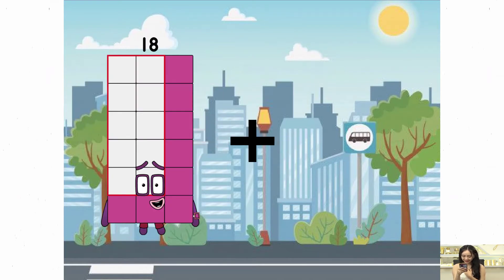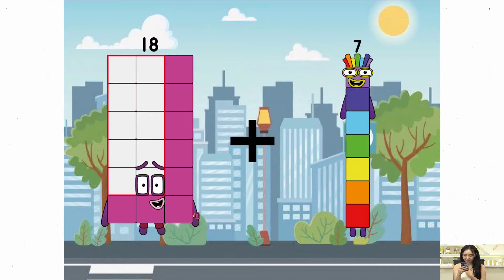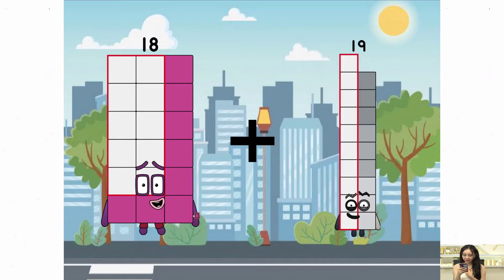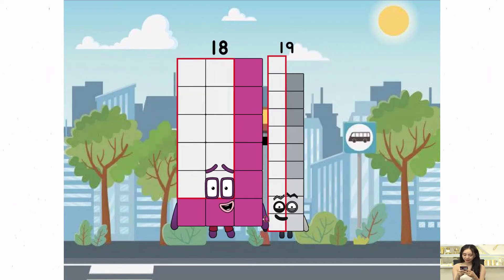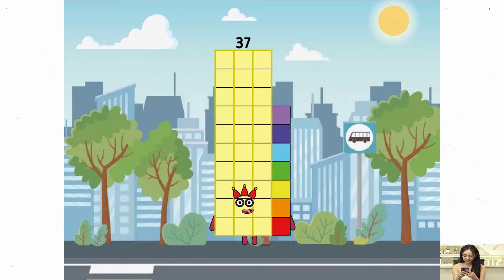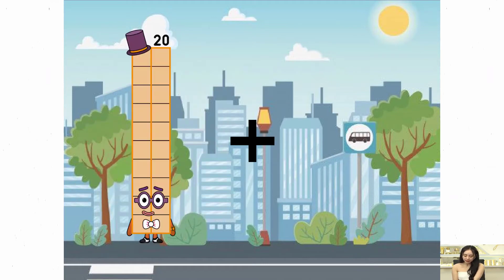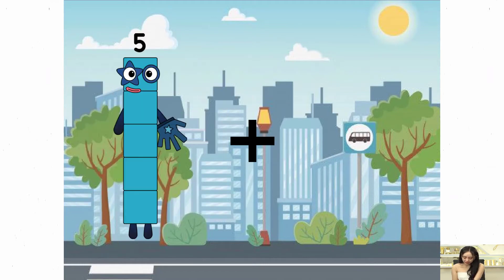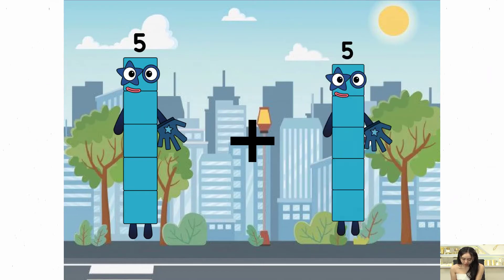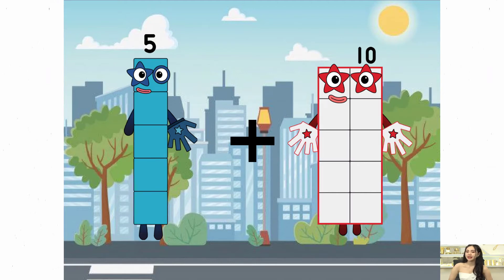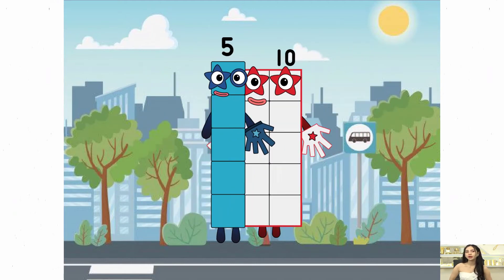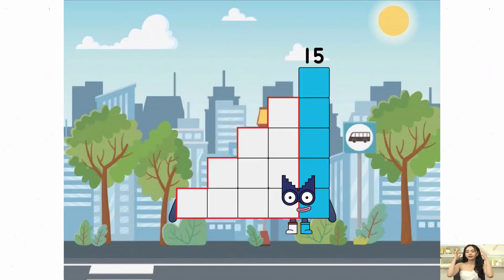18 plus 19 equals 37. 5 plus 10 equals 15.